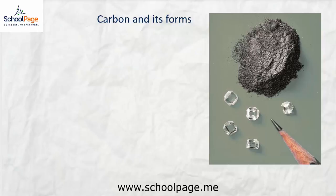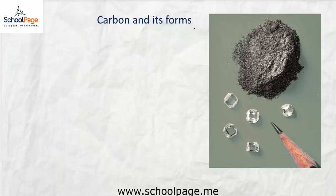Carbon occurs in nature in both pure form — the elemental form — and also in the combined state, where it combines with other elements to form compounds. In the pure form, it occurs in two states: carbon occurs as graphite and also as diamond.